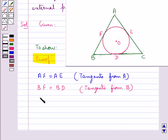In the same way we have CD equals CE since they are also the tangents which are drawn from point C.